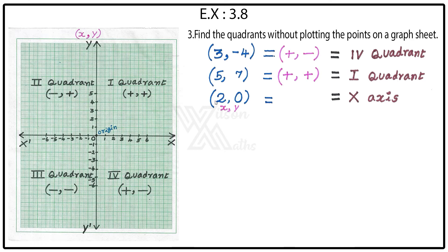Third point: 2 comma 0. The first value is the x coordinate, the second is the y coordinate. Here x is 2 and y is 0. Therefore, if the y value is zero, it lies on the x-axis.